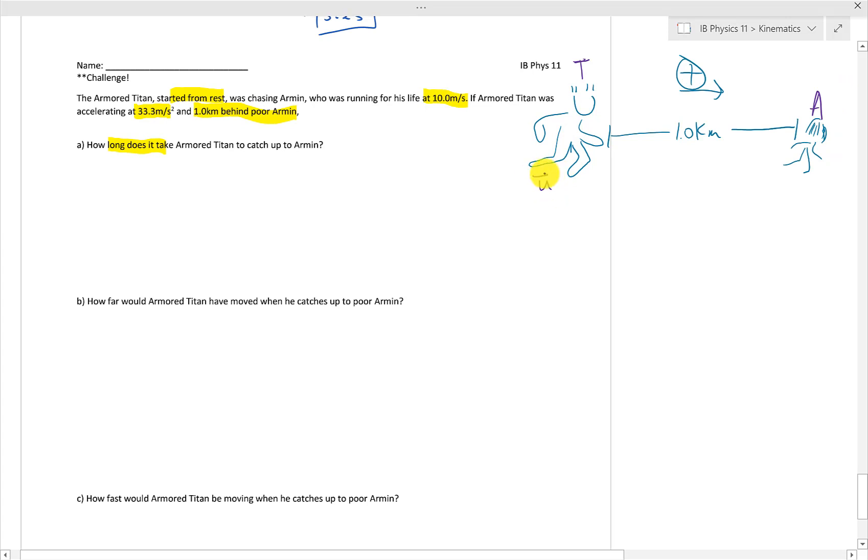Let's start labeling a few things. We know that this Armored Titan here, which I'm just going to label him as T, and Armin as A. Titan, so his initial velocity, we know he starts from rest. This is zero meters per second.